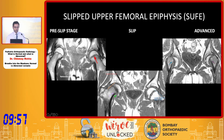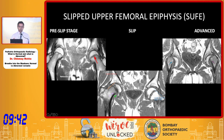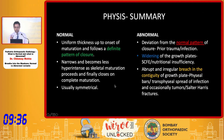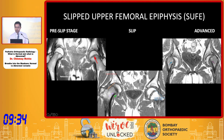Coming to the third example — this is SUFE, slipped upper femoral epiphysis. The normal physis is on the right side, whereas on the left side it is widened and irregular. This is the pre-slip stage; this is the slip stage wherein the Klein's line doesn't intersect the physis on the medial aspect — the physis is slipped medially. In the advanced stage the epiphysis is completely displaced medially.